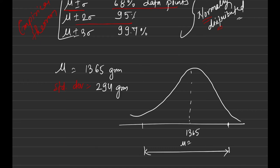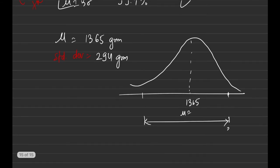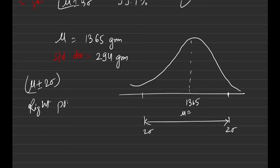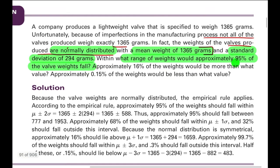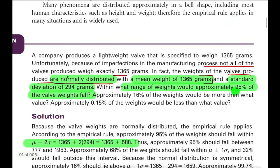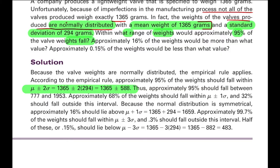Since the data is normally distributed, we know 95% of data falls within mu ± 2σ. So the right-side point is 1365 + 2 × 294, and the left-side point is 1365 − 2 × 294. Calculate these values to get the range — this is the interval within which 95% of valve weights will fall.